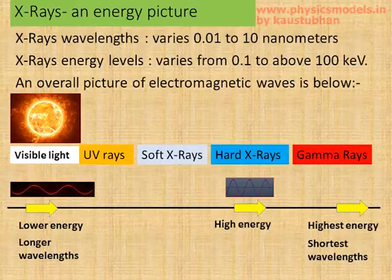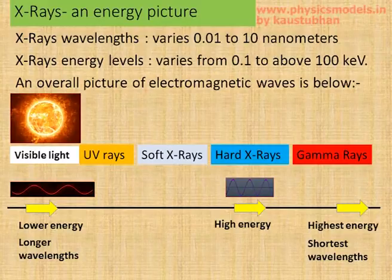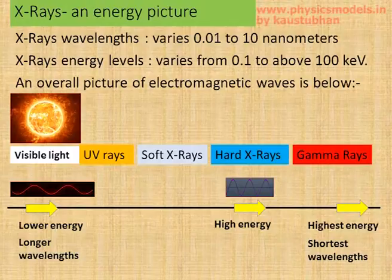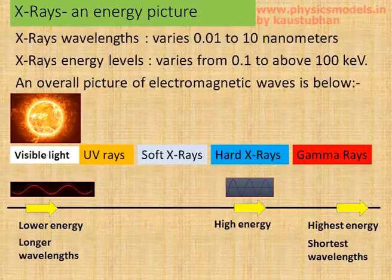It's worthwhile, while talking about high energy and all that, to look at where does the energy level of an X-ray fall in the overall picture. So below is an overall picture. You have visible light on the left hand side, which has the minimum energy, and on the right extreme, you have the gamma rays, which have the highest energy.